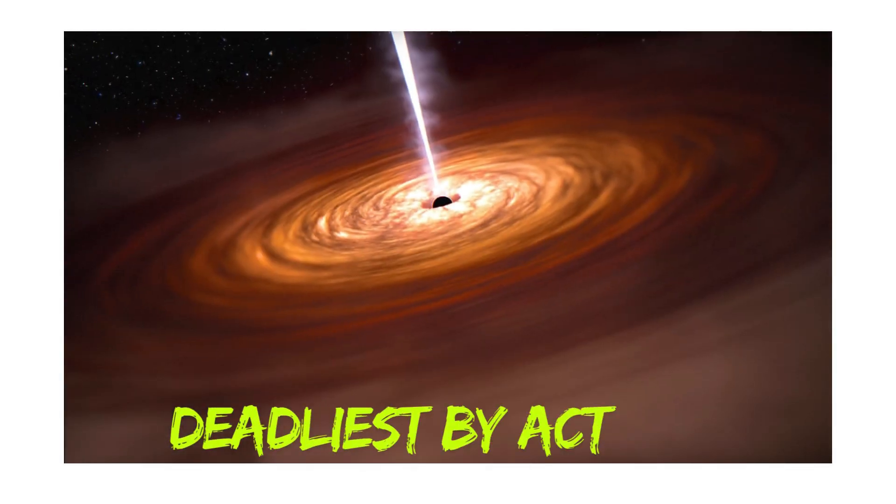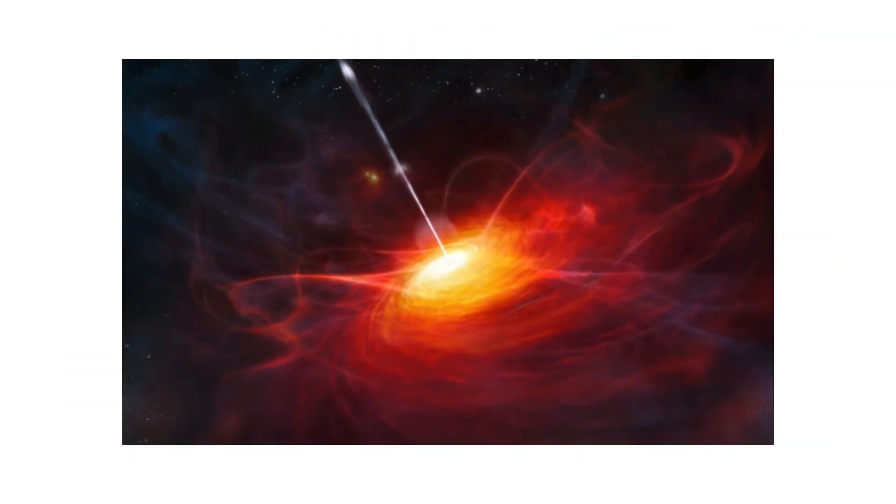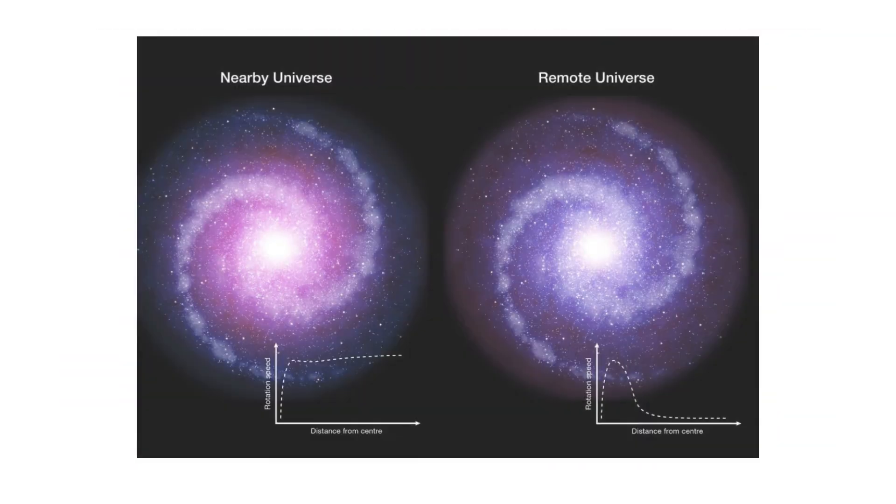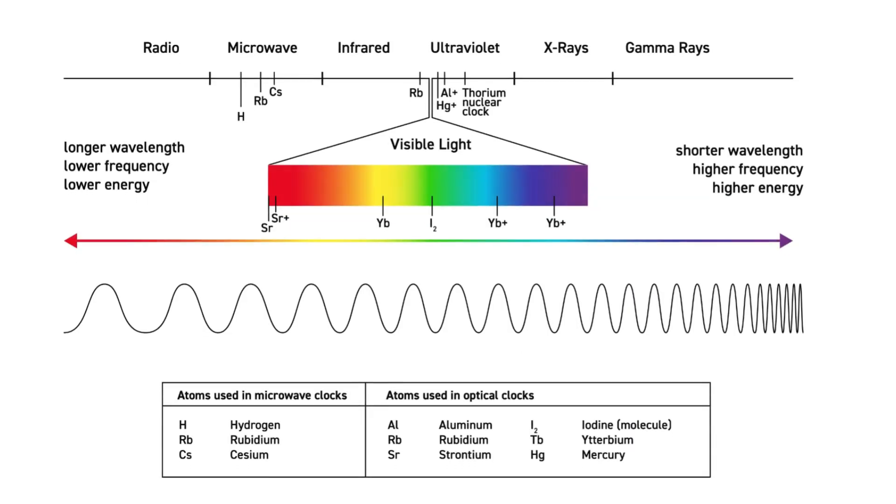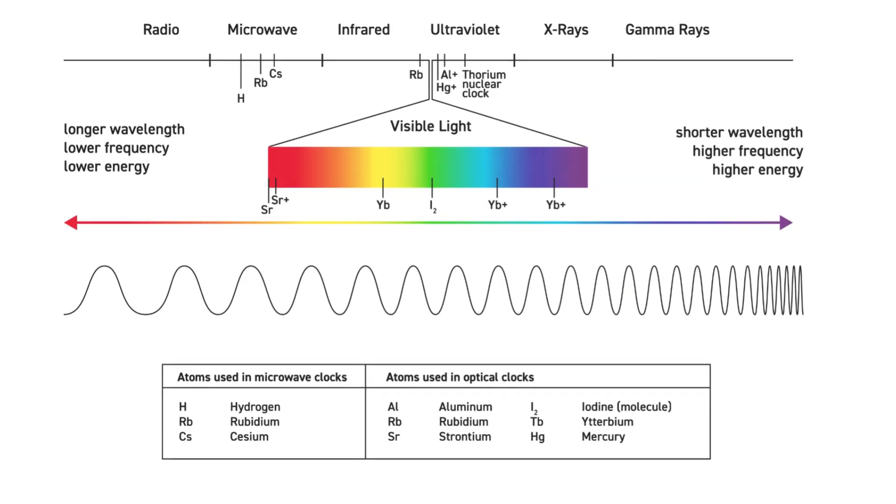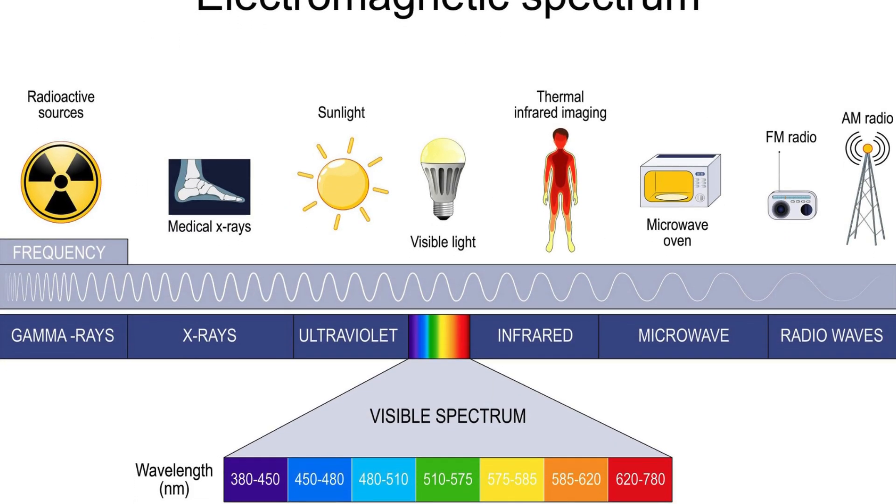Deadliest by activity. The most active black holes are quasars and blazars, powered by thick accretion disks feeding at high rates. When matter spirals inward, it is compressed and heated to millions of degrees, radiating across the electromagnetic spectrum.